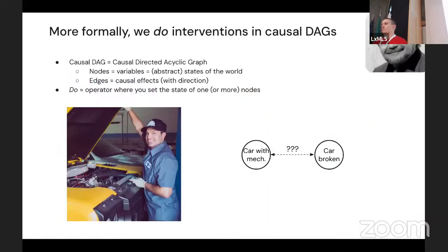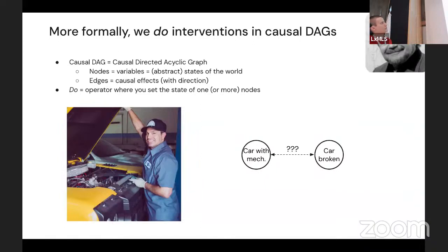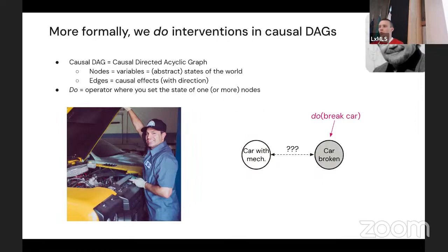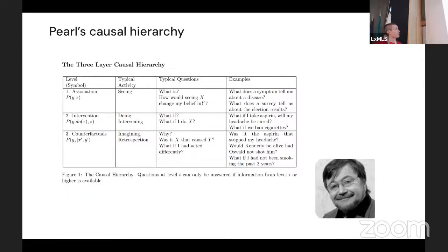This idea of intervention has been formalized by Judea Pearl among others in the language of causal DAGs and the do-calculus. A causal DAG is a causal directed acyclic graph: there are nodes which correspond to abstract states of the world, and directed edges which represent causal effects. Pearl introduced the do-operator, which allows you to set the state of one or more nodes. For example, you could intervene to bring a car to the mechanic, or break a car, and from these experiments infer that the causal arrow goes from 'car is broken' to 'ends up with a mechanic,' not the other way around.